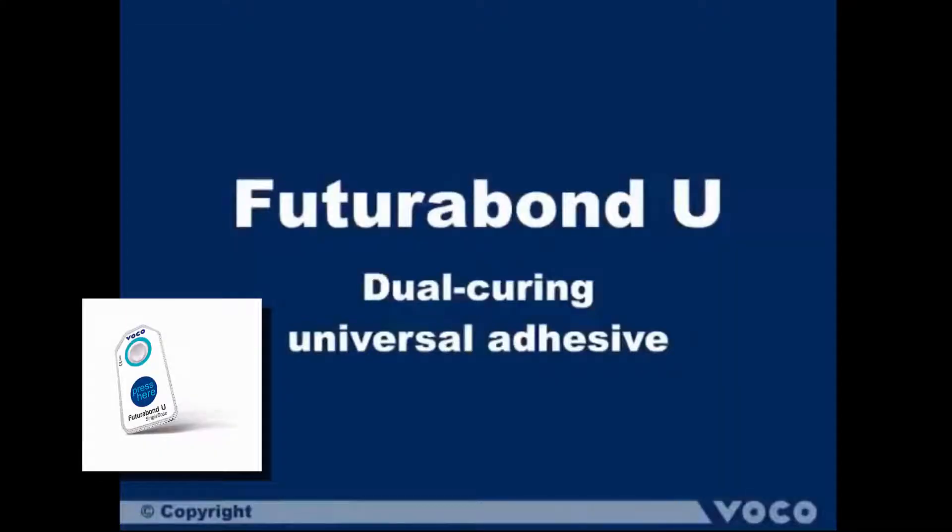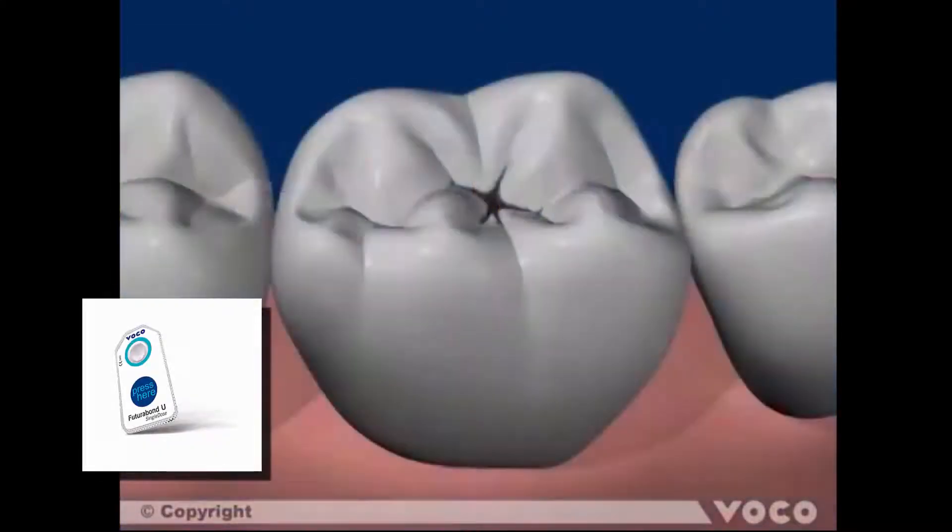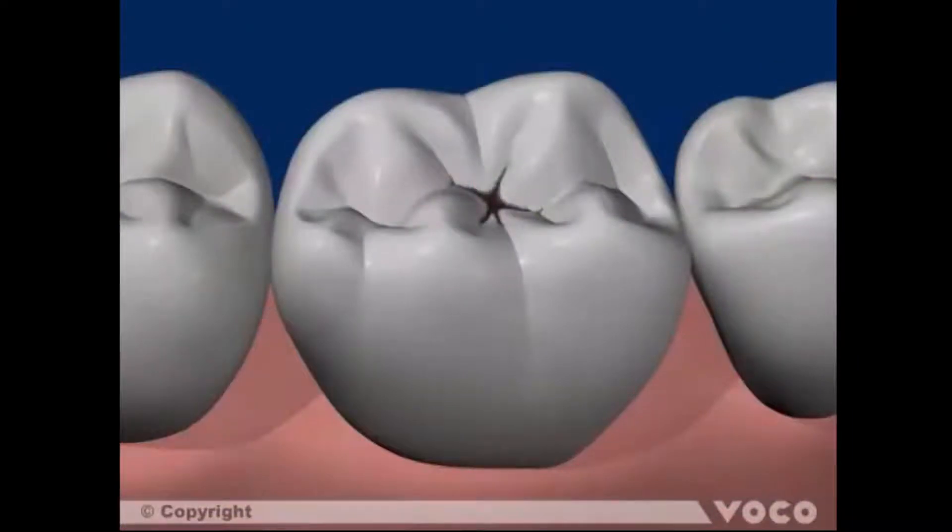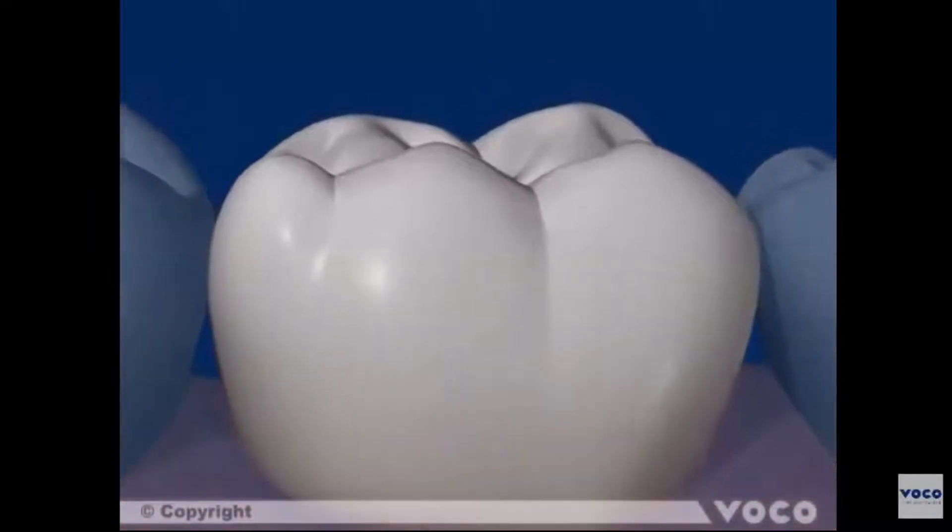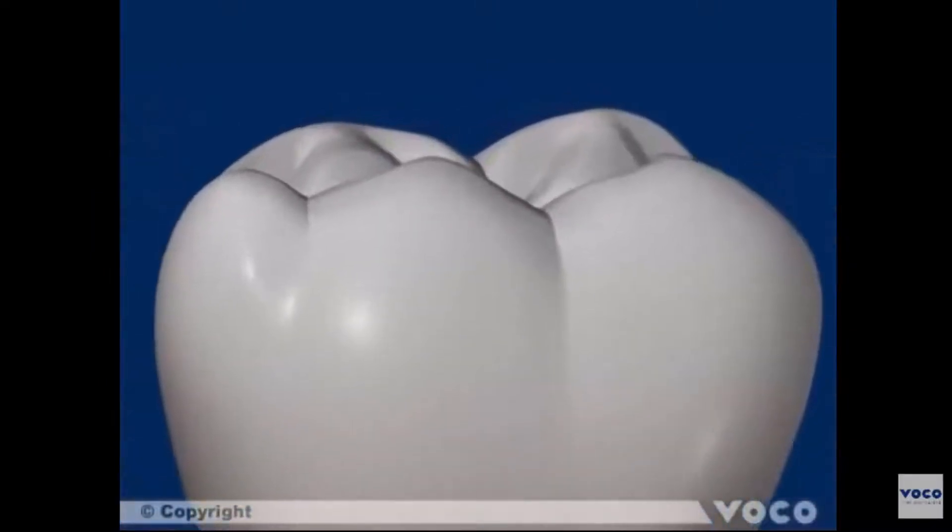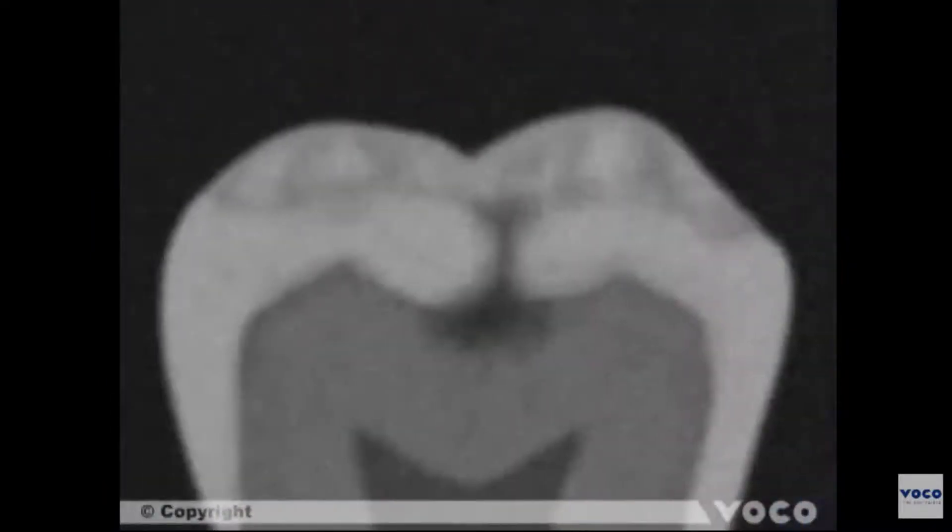This tutorial shows the ongoing processes when using a universal adhesive in self-etch mode featuring Ferturibon U by VoCo. Here is an example of a caries lesion seen clinically in the enamel and radiographically with the typical spreading of the caries into the dentin.